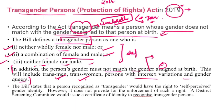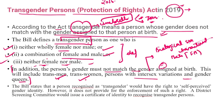Intersex variations — यह basically एक biological term है। जिसके biological sex characteristics अलग होते हैं — for example, कोई male और female दोनों reproductive organs के साथ पैदा हुआ हो। यह hormonal changes या chromosomal abnormalities की वज़ह से होता है। यह आपका biological वाला part है। बाकी जो terms हैं वो society से related हैं।